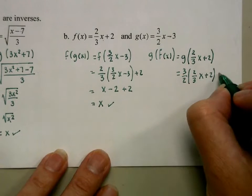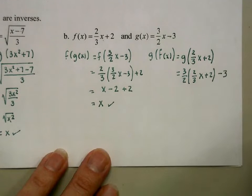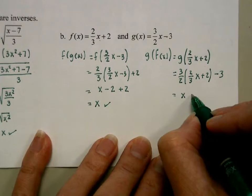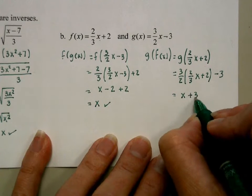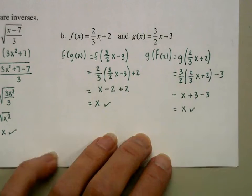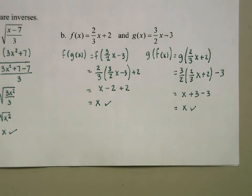We'll repeat it the other direction. We'll distribute there to get x + 3 - 3. So we get x. This is topic 2.8 inverse functions. Thank you for watching.